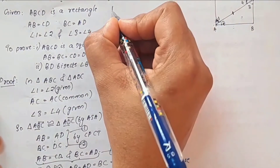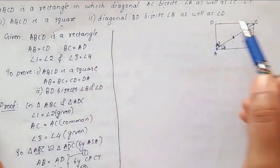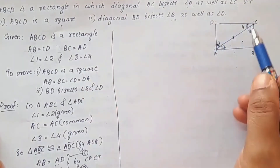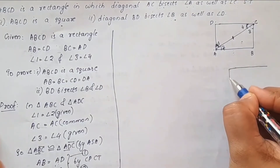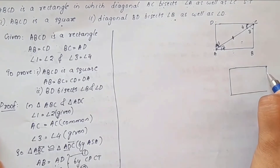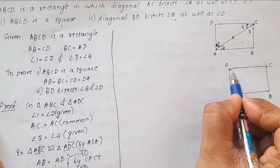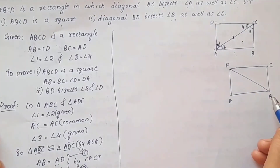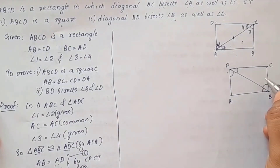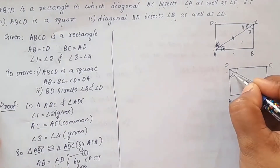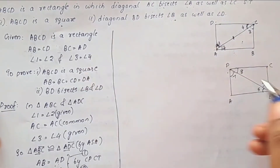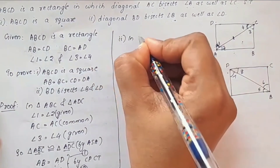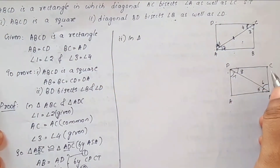For the second part, we need to prove BD bisects angle B and angle D. We draw the figure with rectangle ABCD and diagonal BD. We consider triangles ABD and CBD.